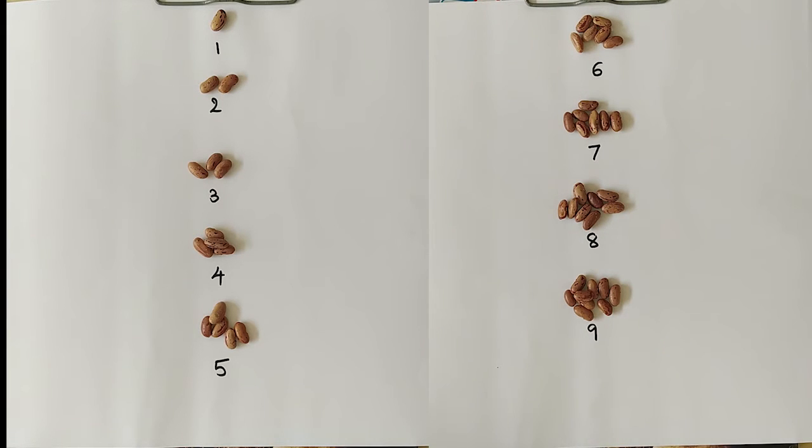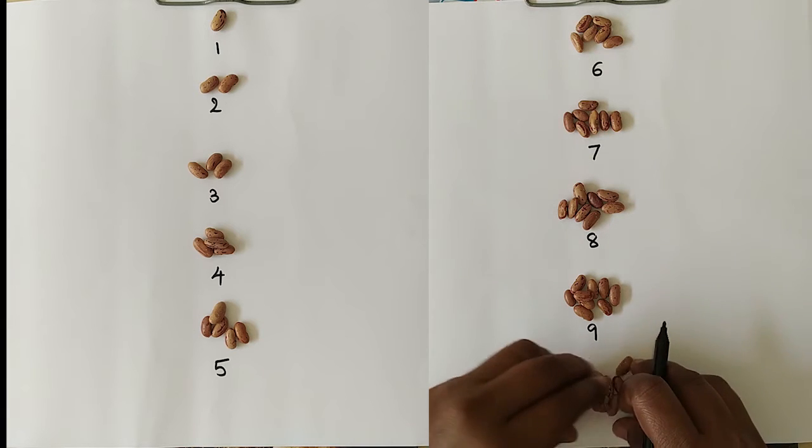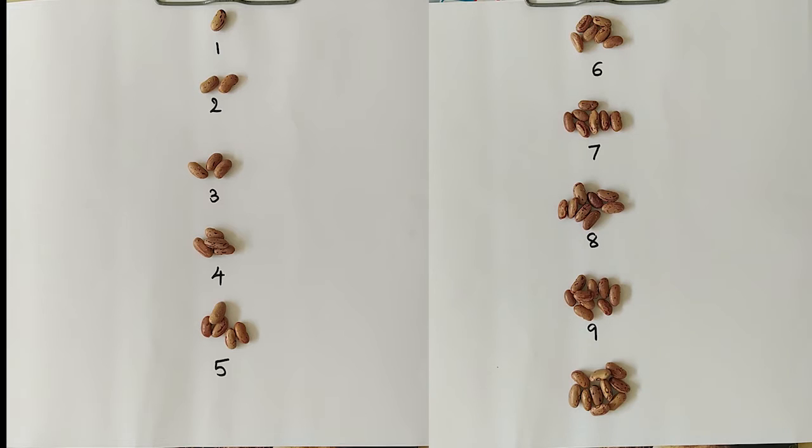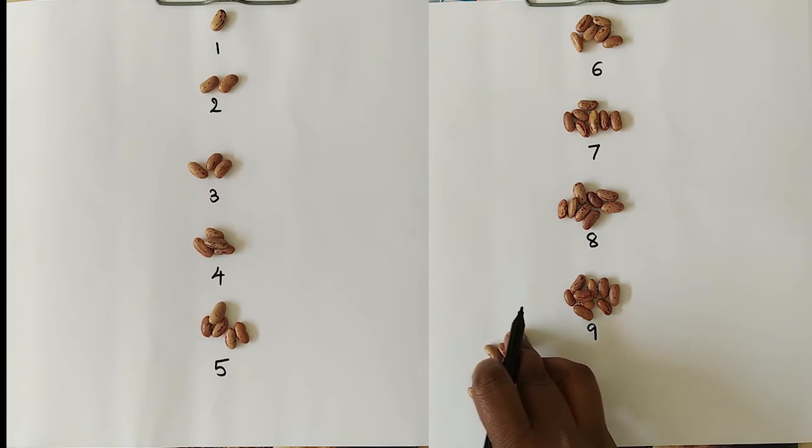So, 1, 2, 3, that way till 9, we will have very different symbols. Now, after 9, when we add one more bean, we do something very special. What we do is, we draw a line and we move all the beans now to the left side.